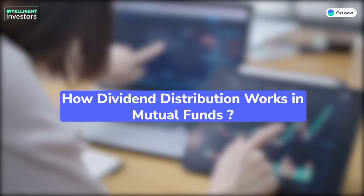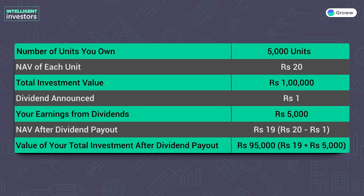On the screen, let's see an example of how dividend distribution works in mutual funds. The number of units you own is 5,000. NAV of each unit is Rs. 20. So your total investment value is 5,000 × 20 = Rs. 1,00,000. Dividend announced is Rs. 1 per unit, so your dividend earnings are 5,000 × 1 = Rs. 5,000. After the dividend payout, the NAV drops from Rs. 20 to Rs. 19. The value of your total investment after the dividend payout is 5,000 units × Rs. 19 = Rs. 95,000. So when you receive Rs. 5,000 as dividend, your investment value falls from Rs. 1,00,000 to Rs. 95,000.